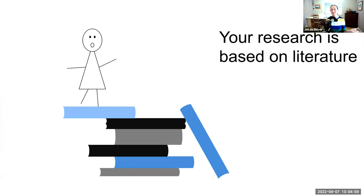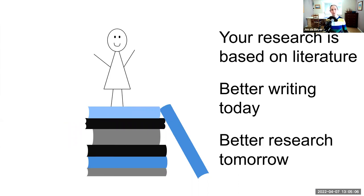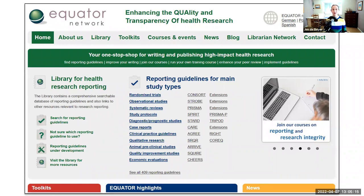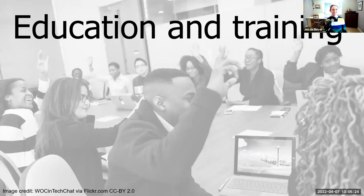The UK Equator Centre is part of the Equator Network, an international organisation aiming to enhance the quality and transparency of health research by improving health research writing. All of the research you do is based on existing literature, so by improving how people write about their research today, we're ensuring better quality research tomorrow. We do this by raising awareness of reporting guidelines, hosting a website with resources, and offering education and training. A huge thank you to Cancer Research UK and the NIHR for funding the UK Equator Centre's programme of research and training.